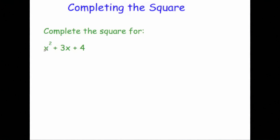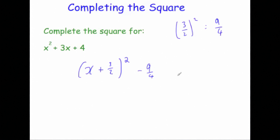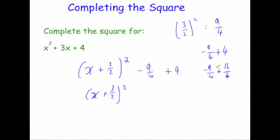Now let's complete the square for a trickier one with a 3x term. Because it's x squared you get x, then half of 3 — write 3 over 2 rather than 1.5 — squared. We take away 3 over 2 squared, which is 9 over 4. Then add 4. So that's x plus 3 over 2, all squared, and then minus 9 over 4 plus 4. Converting 4 to quarters gives 16 over 4, so minus 9 plus 16 is 7, giving plus 7 over 4. The answer is x plus 3 over 2 squared plus 7 over 4.